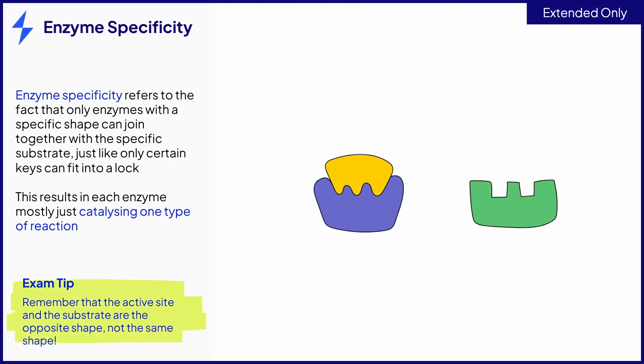It's an easy mistake to make to say that the enzyme and substrate are the same shape. It's important to remember that this is not correct and they are the opposite shapes. It is said that they are complementary in shape to each other.